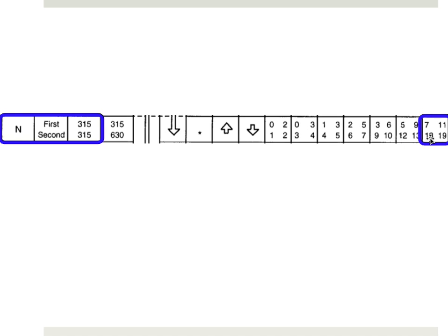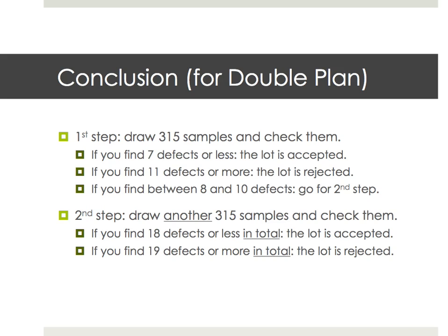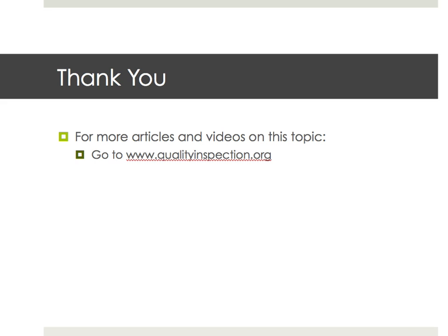Let's say 1.5% is your AQL for major defects. The table gives you: first sample 315, with limits 7 and 11; second sample 315, with limits 18 and 19. First, you pick 315 samples. If you find 7 or below, it's accepted. If you find 11 or above, it's rejected. For the unclear cases — 8, 9, or 10 — you go for second sampling: check another 315 samples. The limits of 18 and 19 refer to the total number of defects including those found in the first 315 samples.